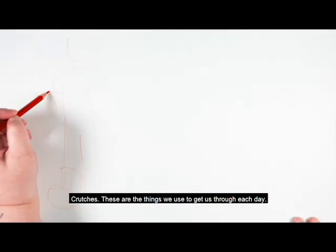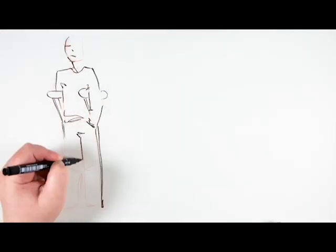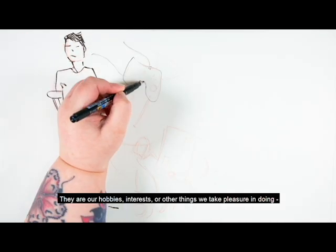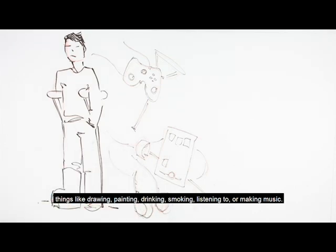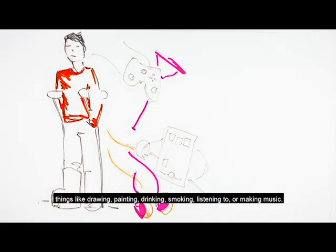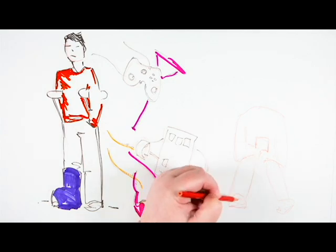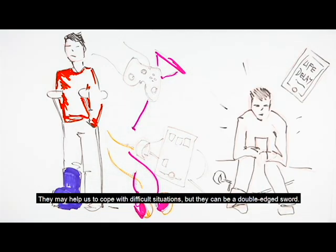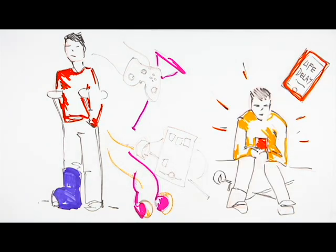Crutches. These are the things we use to get us through each day. They are our hobbies, interests, or other things we take pleasure in doing - things like drawing, painting, drinking, smoking, listening to or making music. They may help us to cope with difficult situations, but they can be a double-edged sword. Our crutches can have another darker side to them.